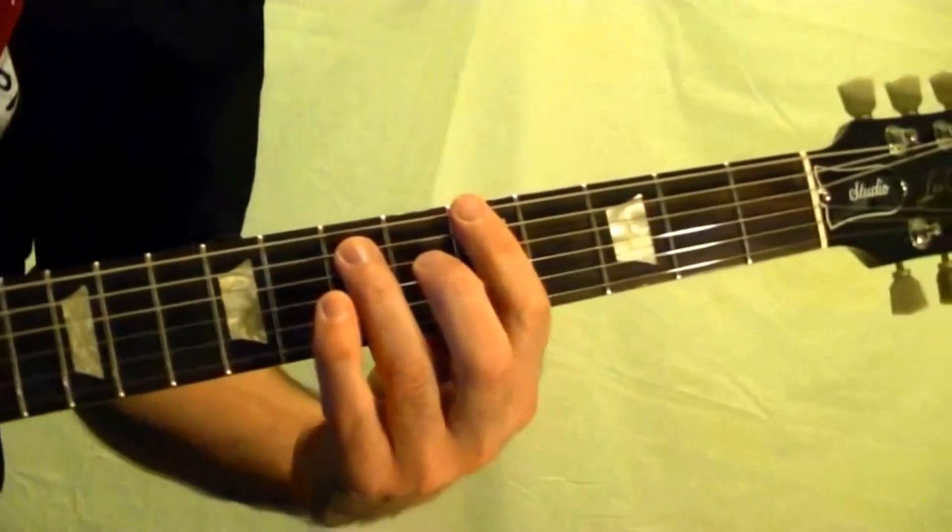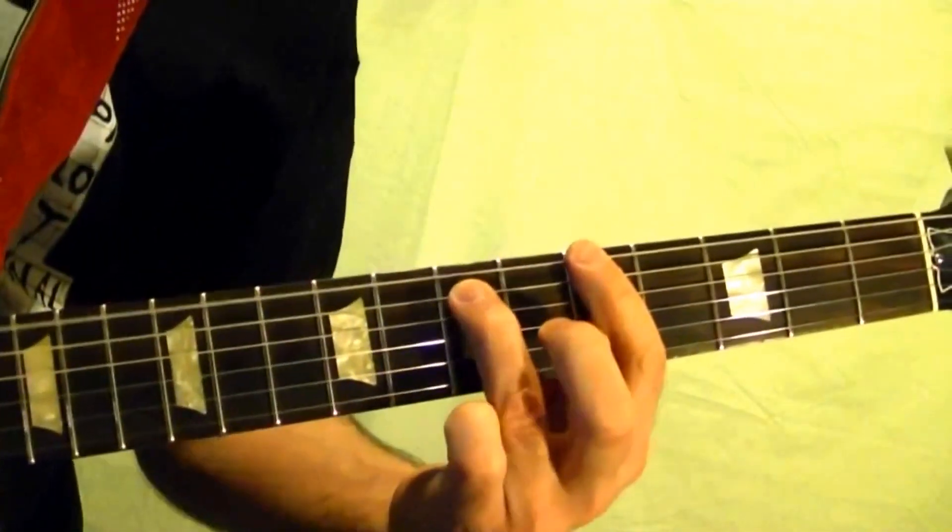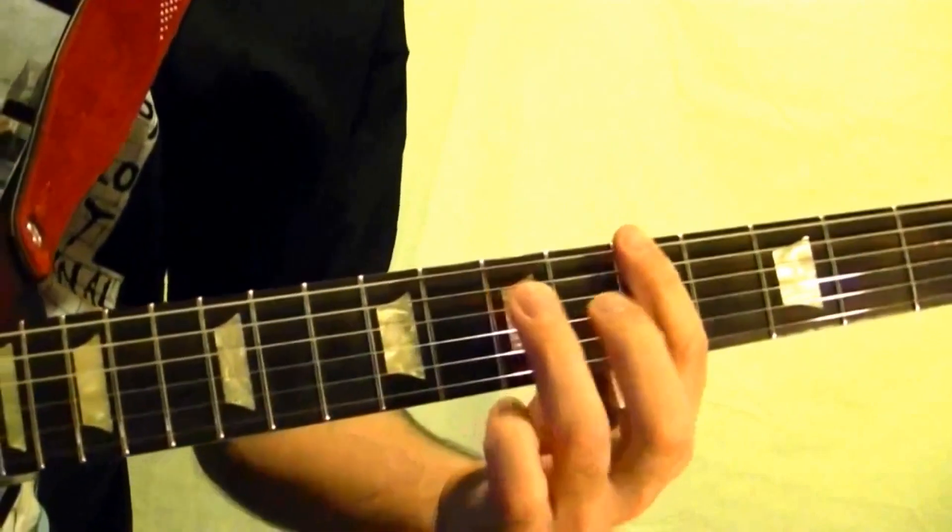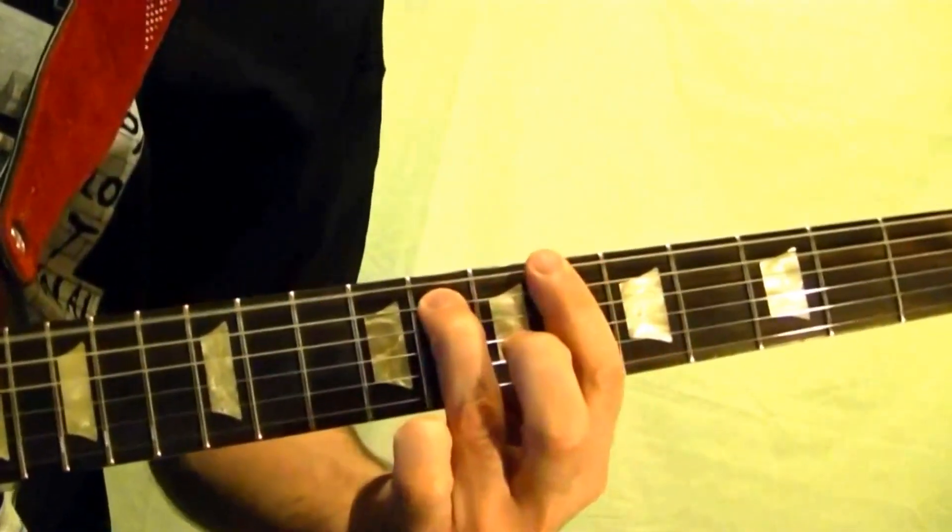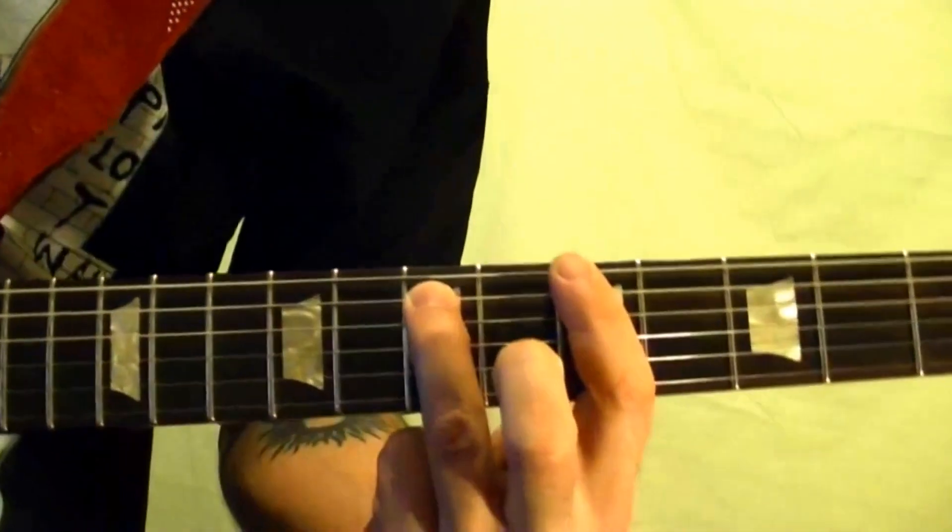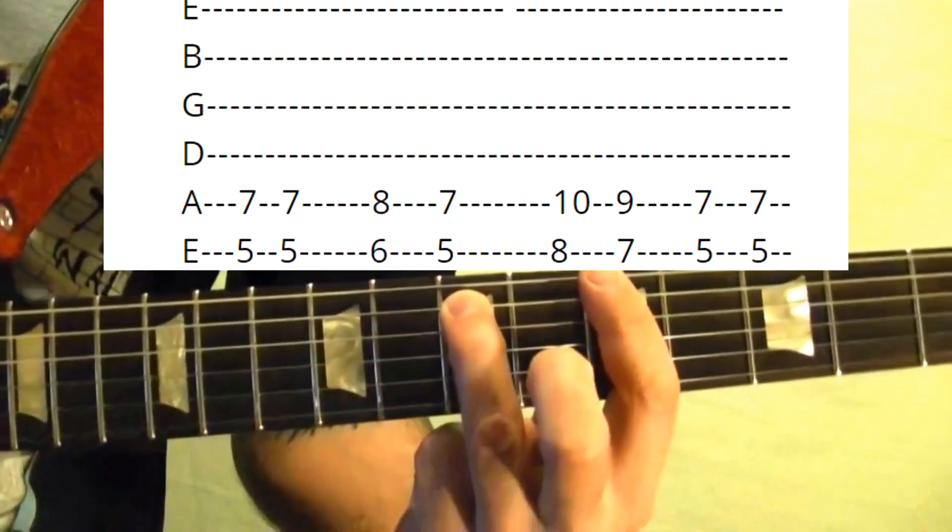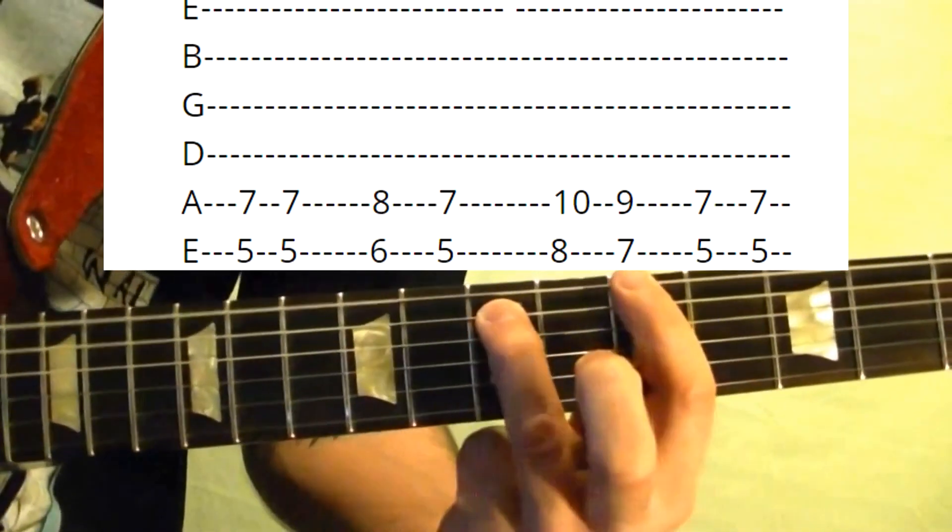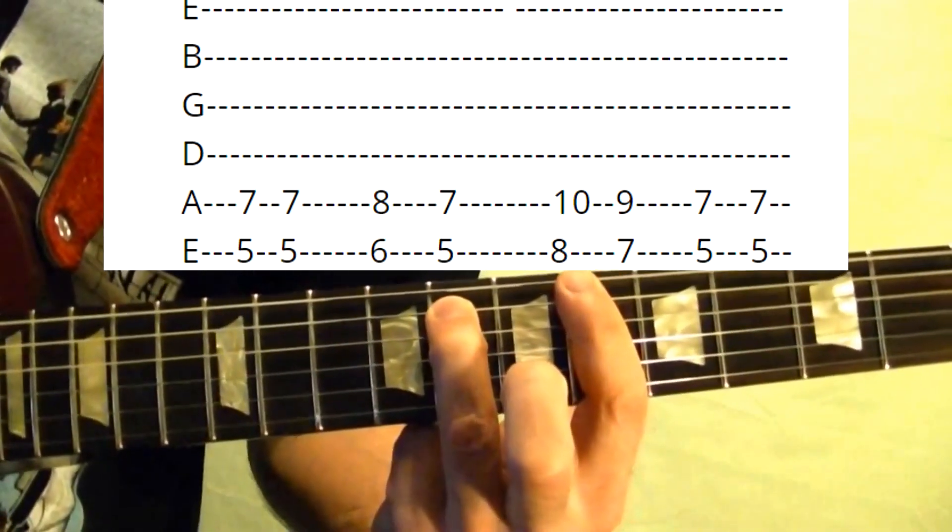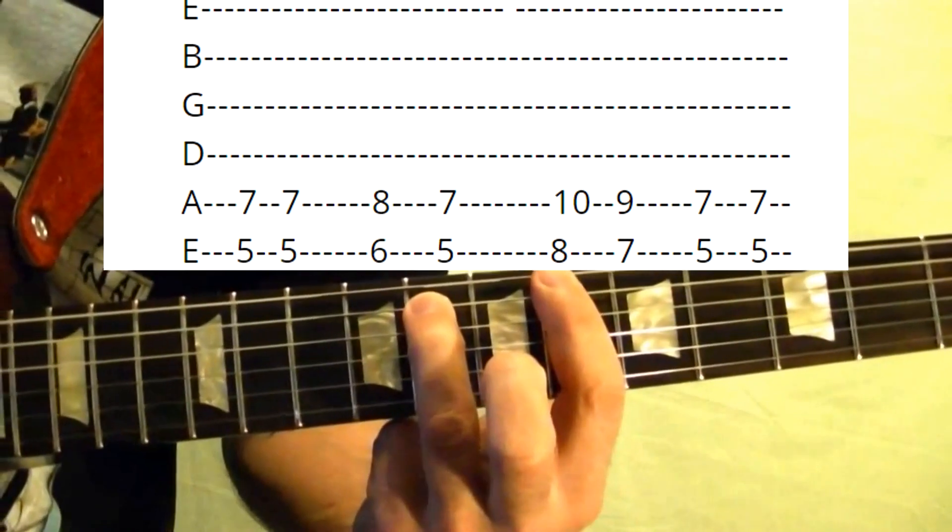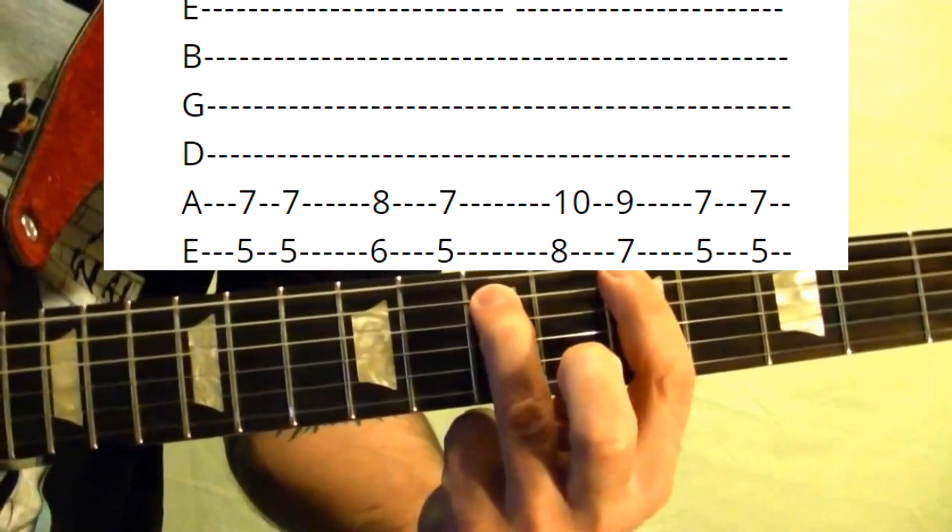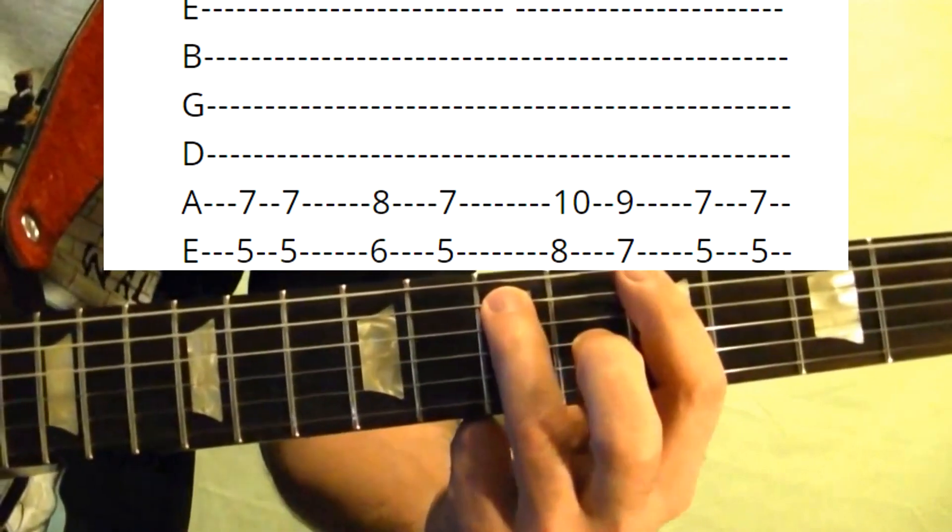The next main riff is this. That's like this: power chords of the top string, fifth fret twice, sixth fret once, back to the fifth. Pretty simple.